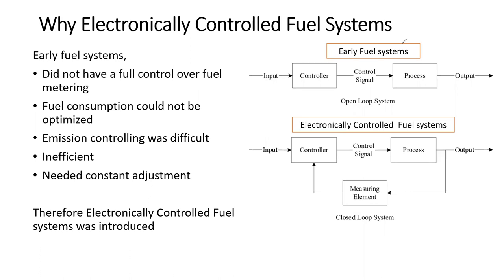After emission issues started, this problem was found out. Later, in order to fix that, a closed loop system was implemented. A closed loop system means the output will actually be measured again — that measured output will be fed back into a controller in order to do fine adjustments to the process to get a better output. The previous ones were very inefficient and needed constant adjustments or constant maintenance.